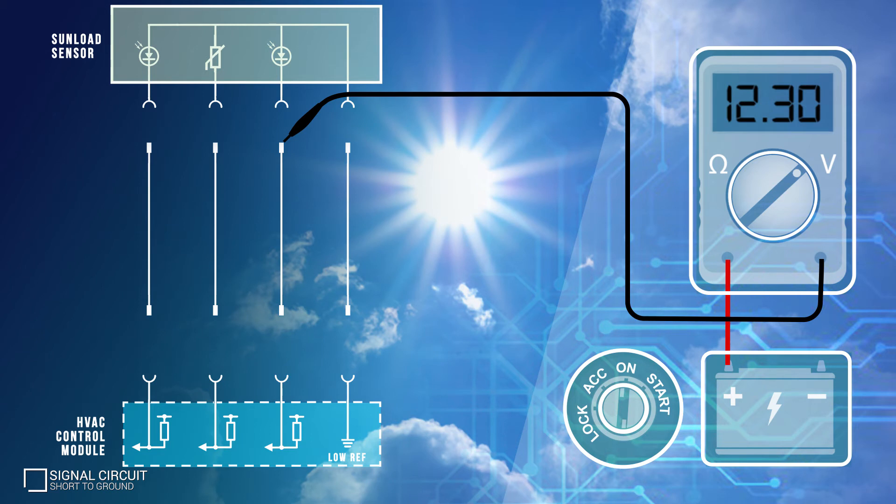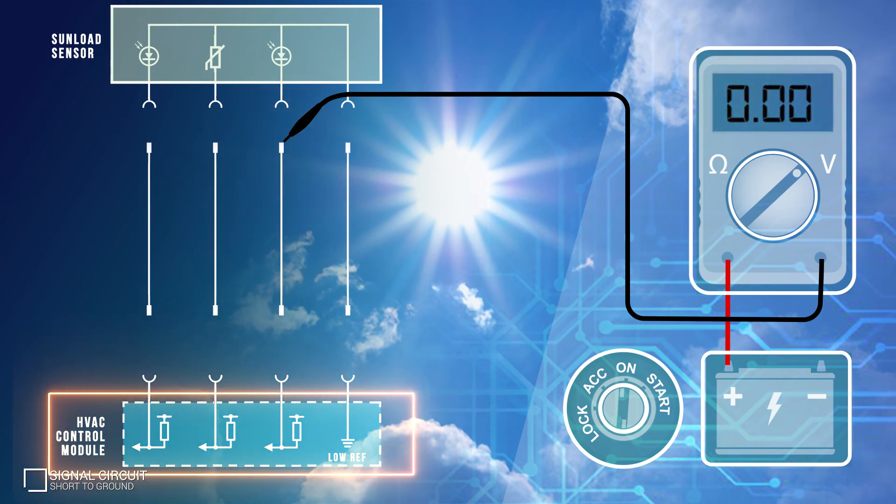If voltage is still present, the short to ground has been localized to the harness. Although if the voltage disappeared, the short may be in the control module or an adjacent circuit from the module.